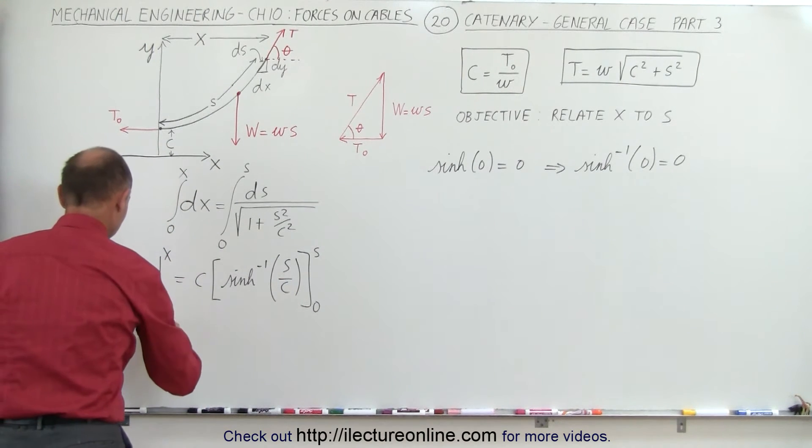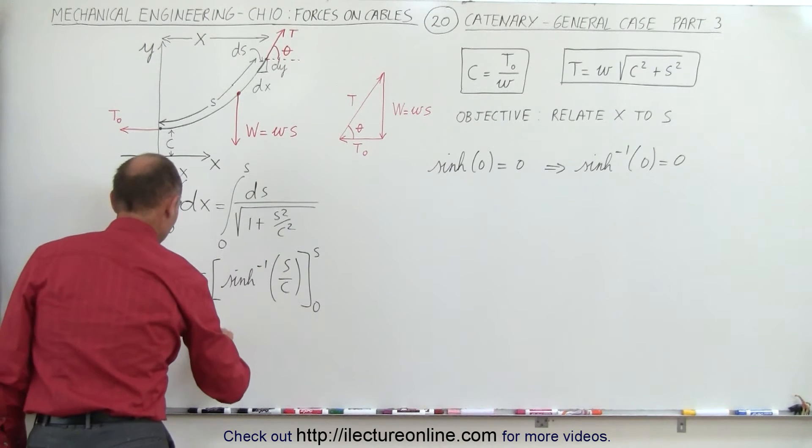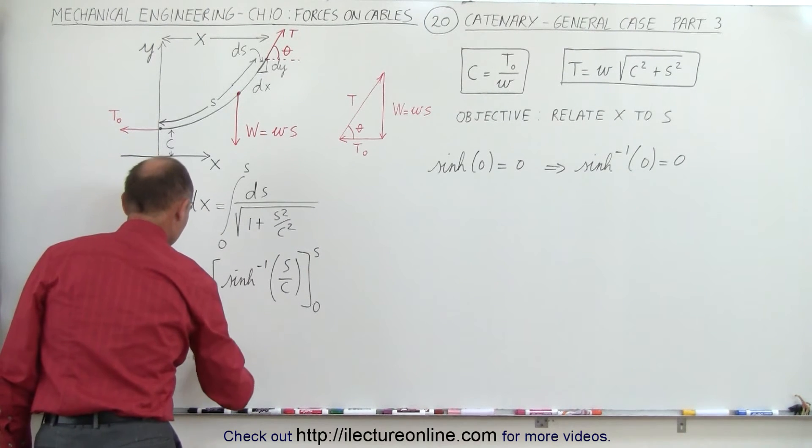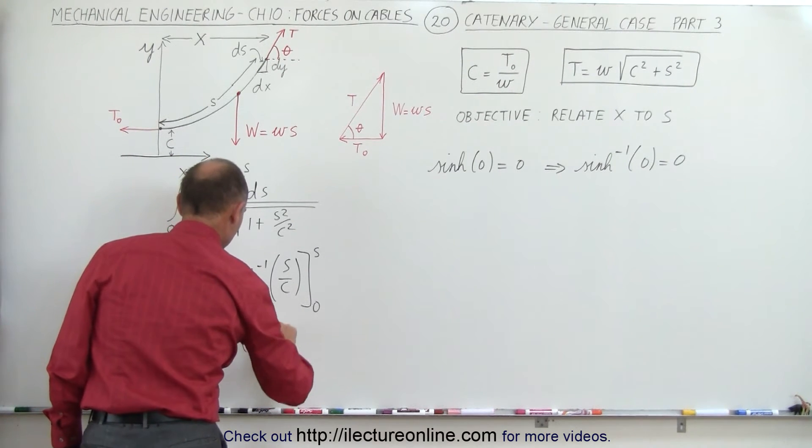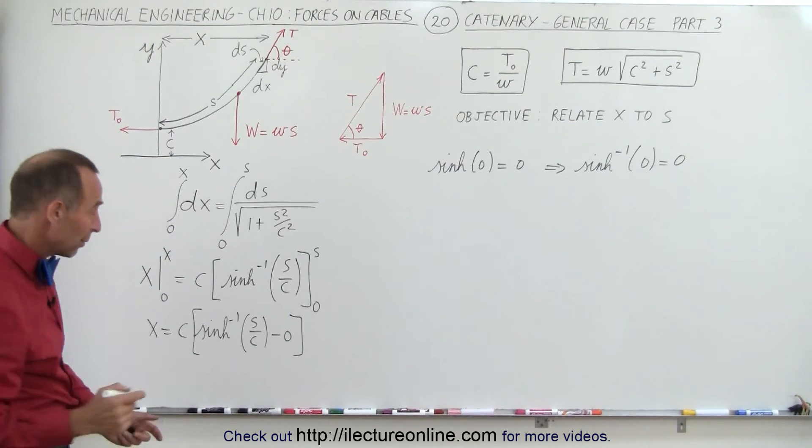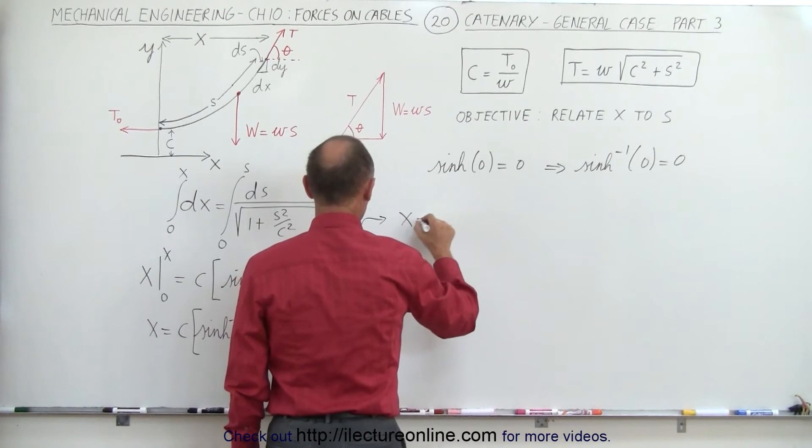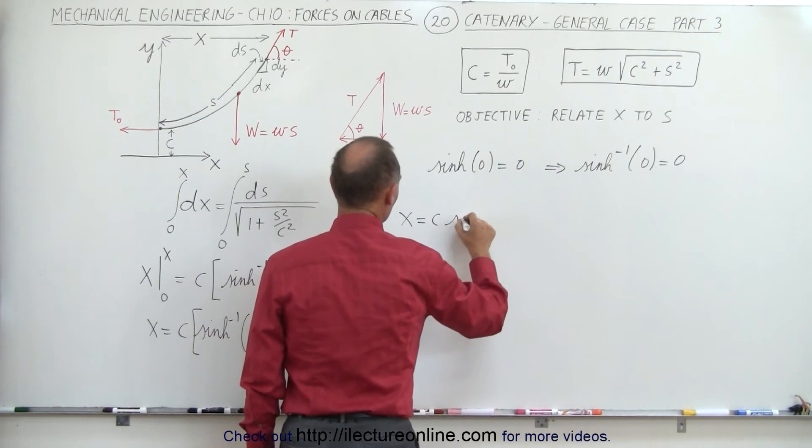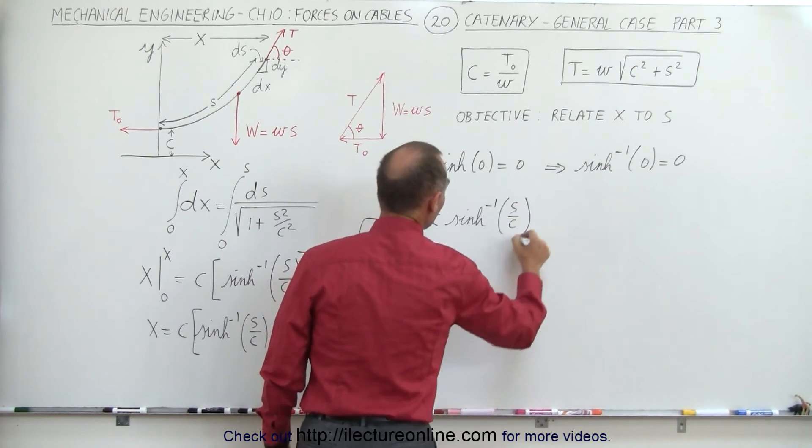That means then that x is equal to c times the inverse hyperbolic sine of s over c minus 0. Of course when we rewrite that we get the following. We get x is equal to c times the inverse hyperbolic sine of s over c.